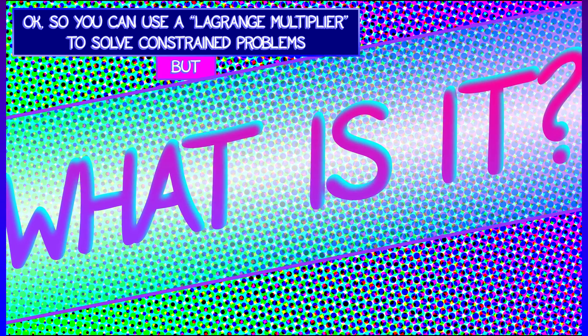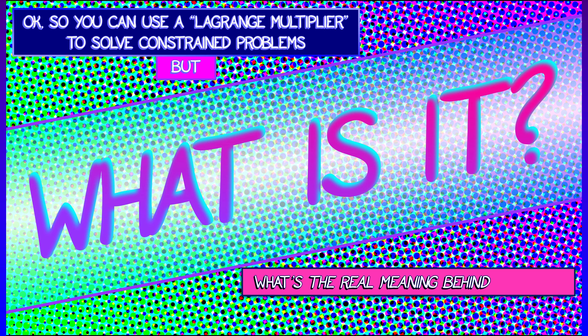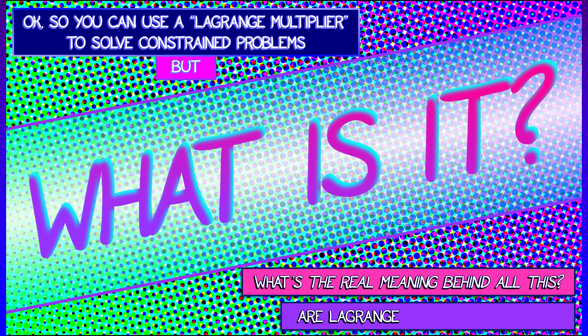So you can use the Lagrange equations to solve constrained optimization, but come on, what is it? I mean, what does it really mean? Is it something physical? Are Lagrange multipliers real? Are they just a trick?